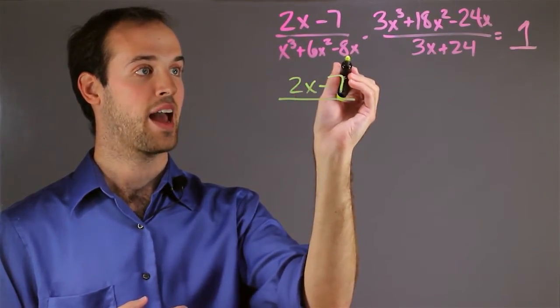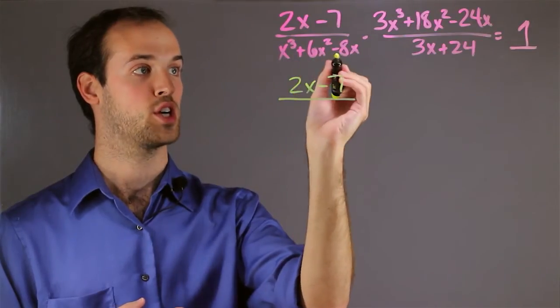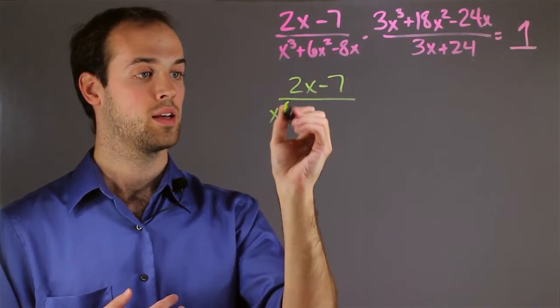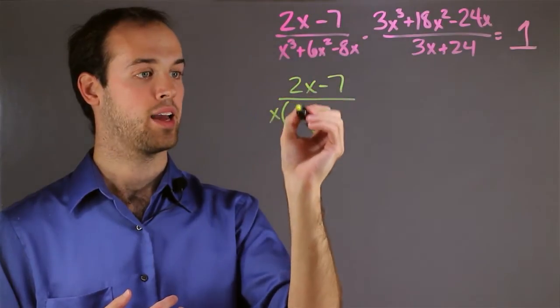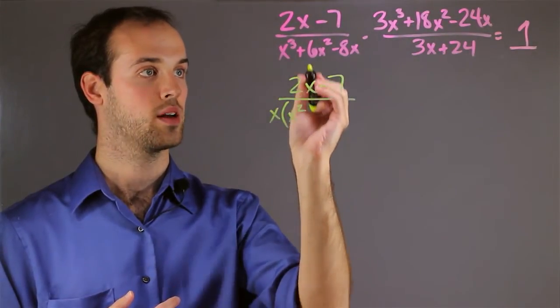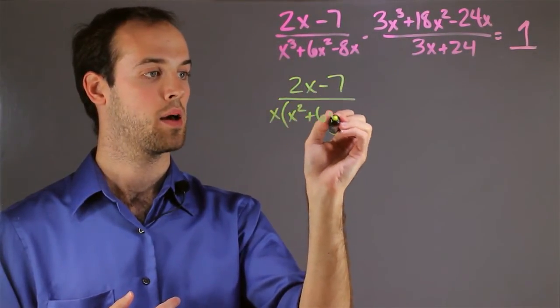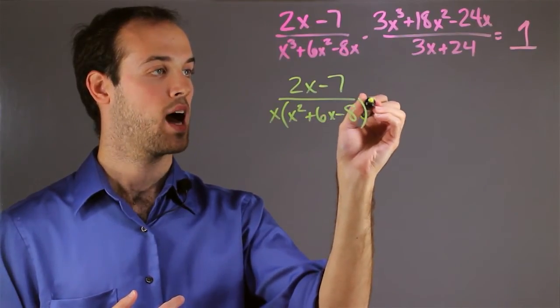But down here I see that I have an x in common with all three terms, so I can pull that out. So x and then goes inside, we have x squared plus 6x minus 8 times.